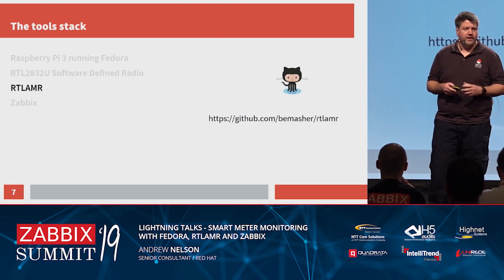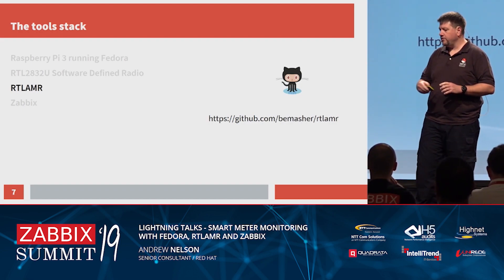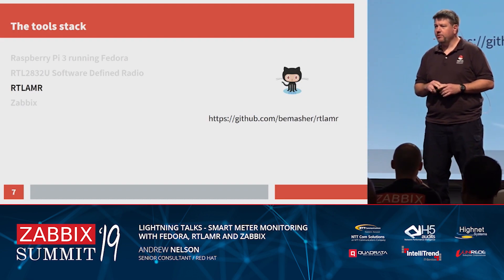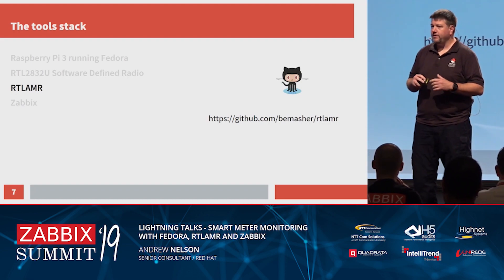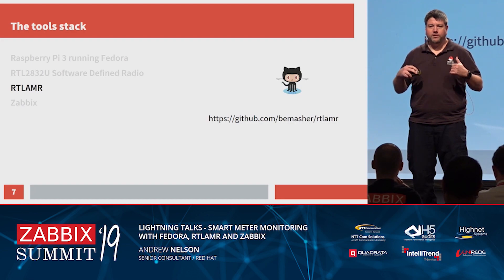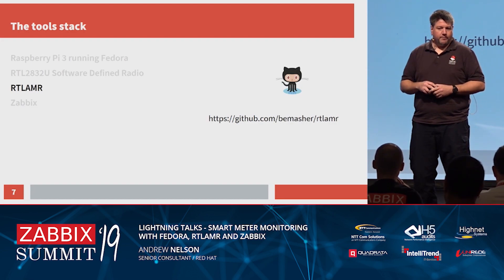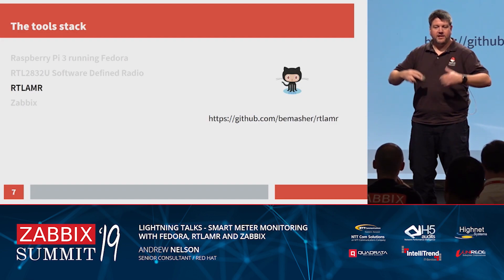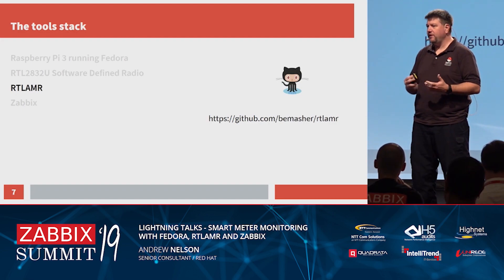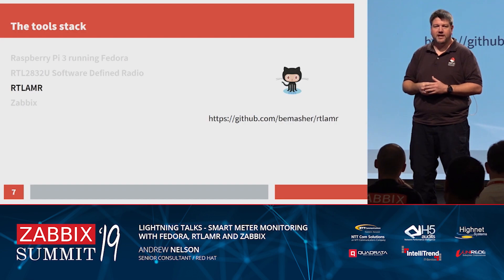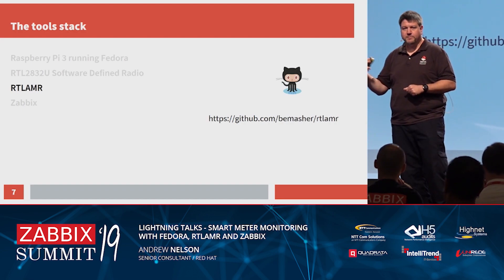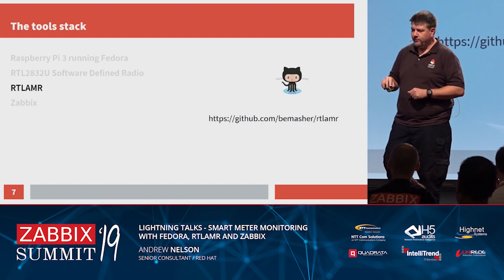We connect into it with software called RTL-AMR. AMR is the Automatic Meter Reading. This is a project written in Go that basically pulls the broadcasts and looks for the IDs of the meters coming out, then spits out a list. From that list, I figured out which meters were mine — which was my gas meter, which was my power meter — and then went forward.